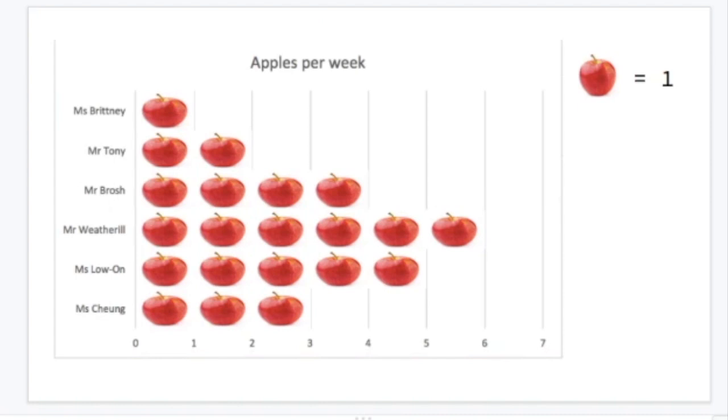We could also look at the numbers down at the bottom of the graph which go up 0, 1, 2, 3, 4, 5, 6. That might be a quicker way to count the number of apples that Mr Weatherill ate, looking at the number 6 there which lines up with the pictures of the apples.